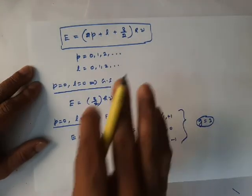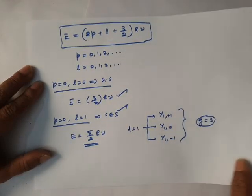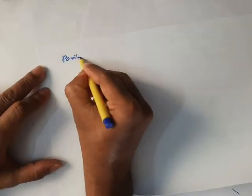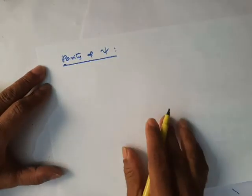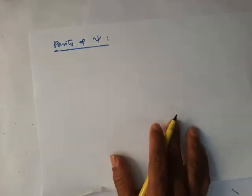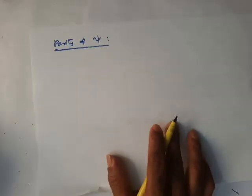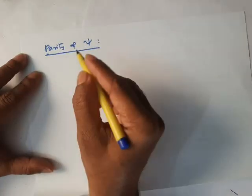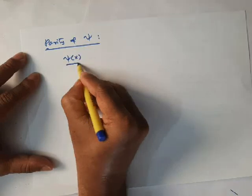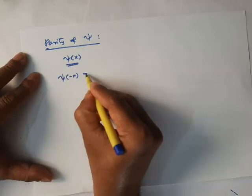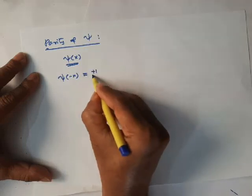This is regarding the three-dimensional harmonic oscillator. Before completing, I will give one more piece of information regarding parity of the wave function ψ. A wave function may have even parity or odd parity, depending upon whether, if I take a wave function ψ(x) and replace x by −x, this equals +1 or −1 times ψ(x).